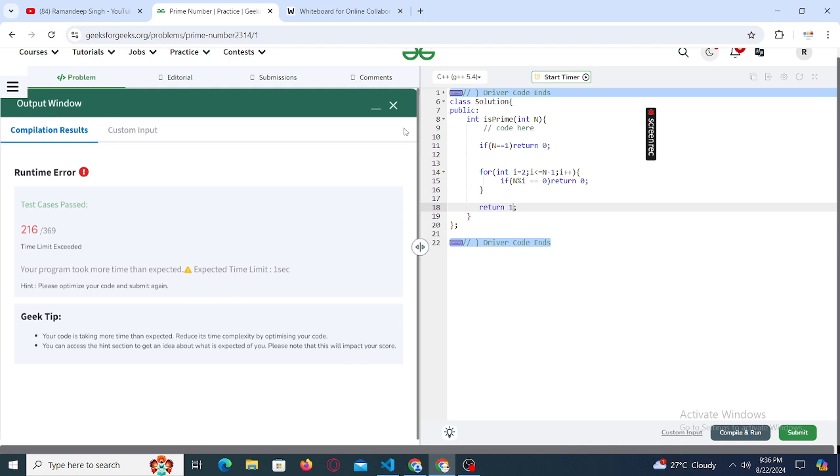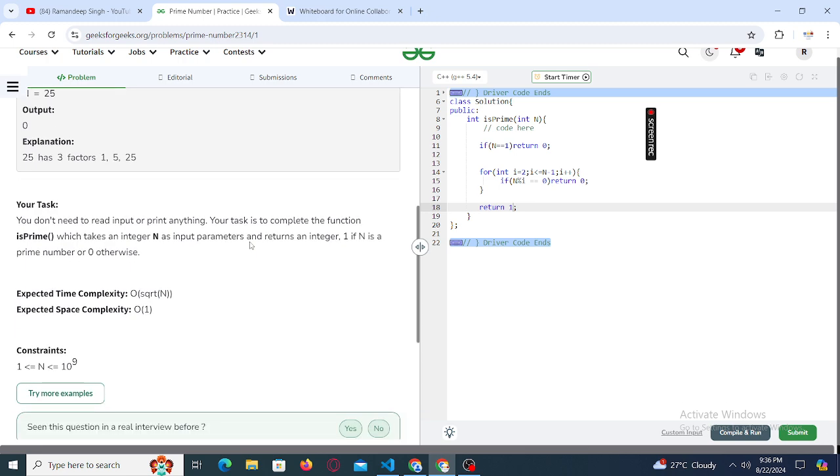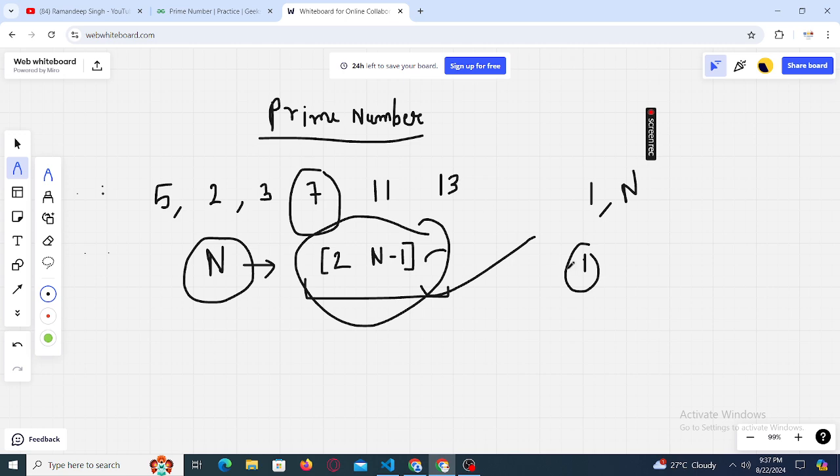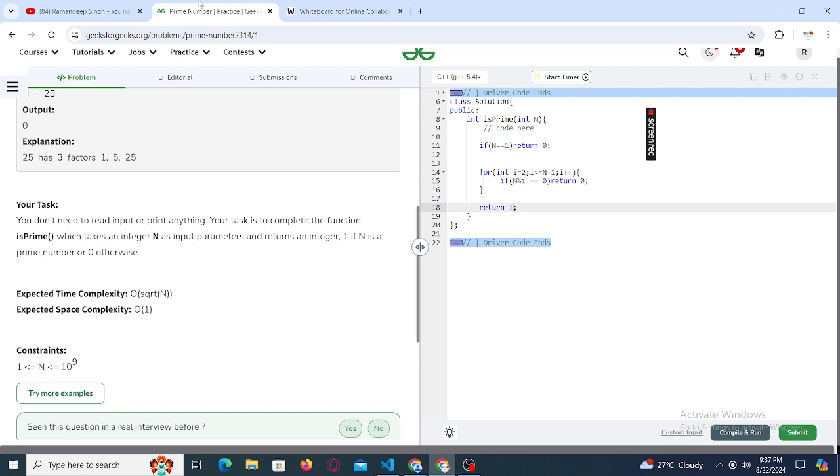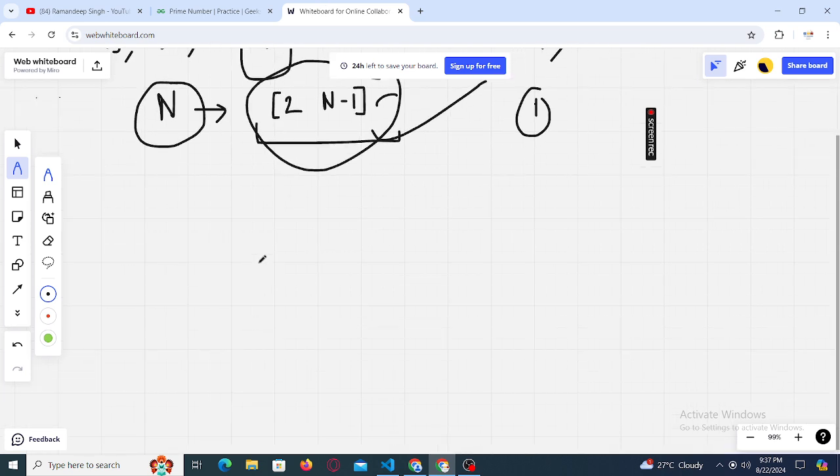Okay, it is giving time limit exceeded. Let's see the constraints. We can see that the expected time complexity for the solution to this problem is square root of n. Okay, that means we cannot submit it in big O of n time complexity, so we'll have to improve upon this solution.